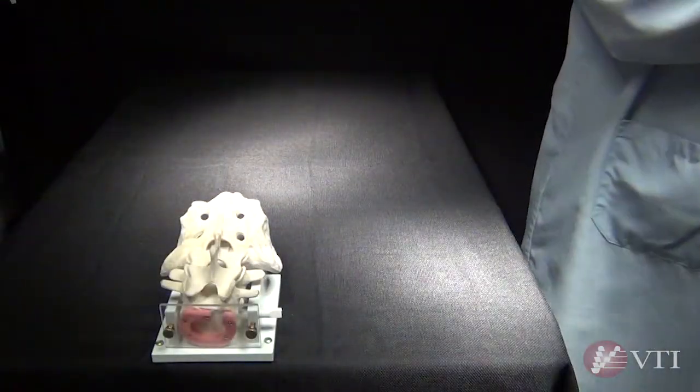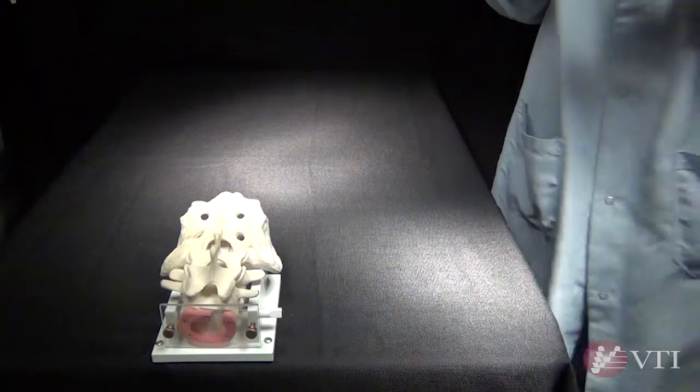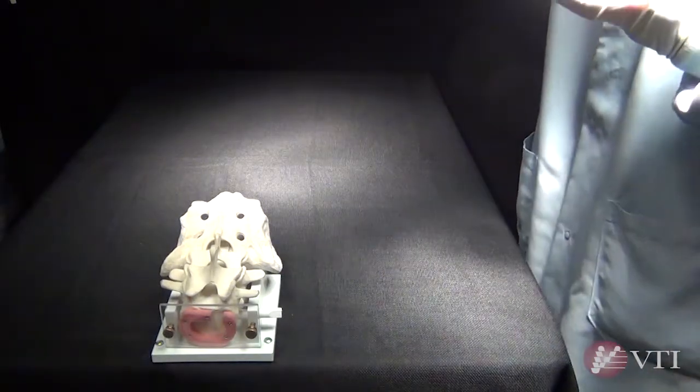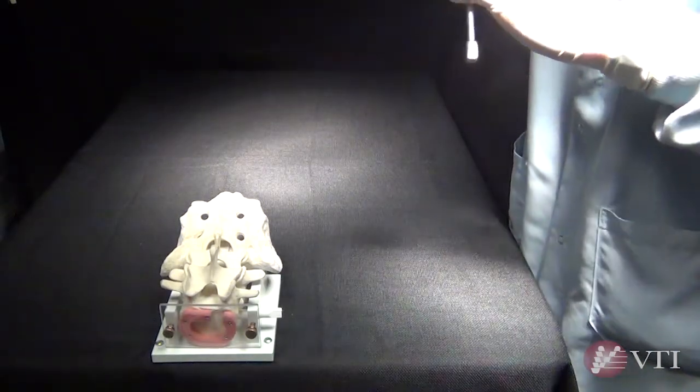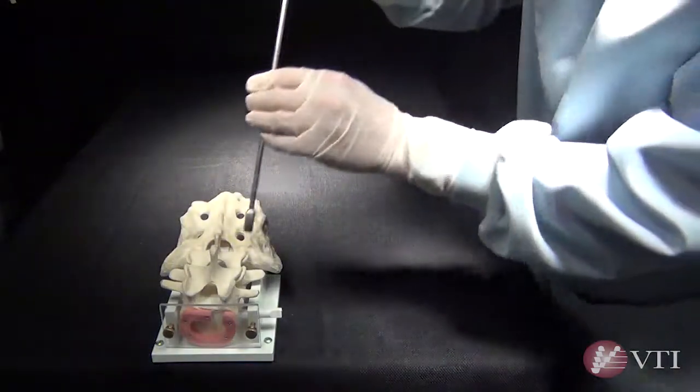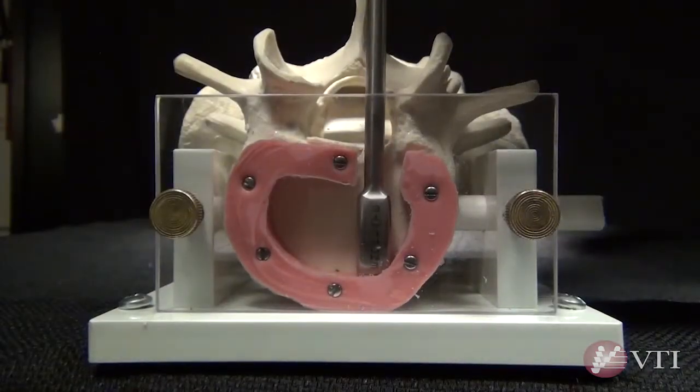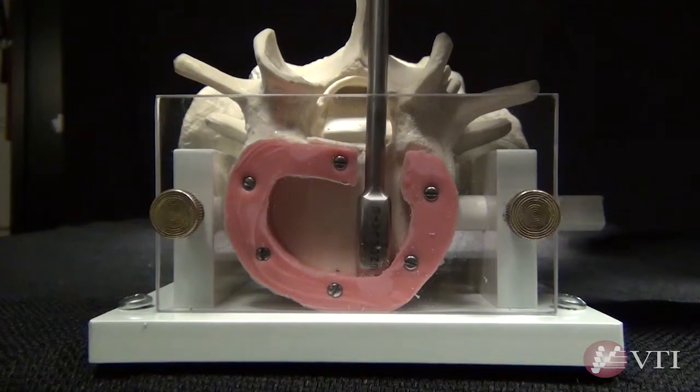Interfuse device height and AP length chosen preoperatively should be confirmed using the device sizers supplied. Final height selection is determined when the sizer appears to fit securely in the disc space but does not require the use of the slap hammer for removal.